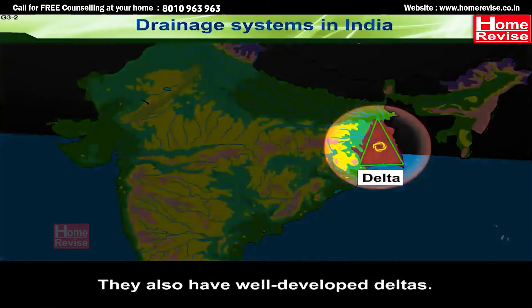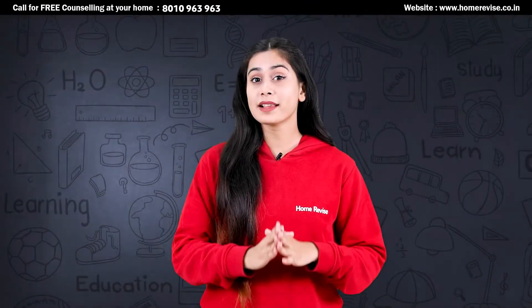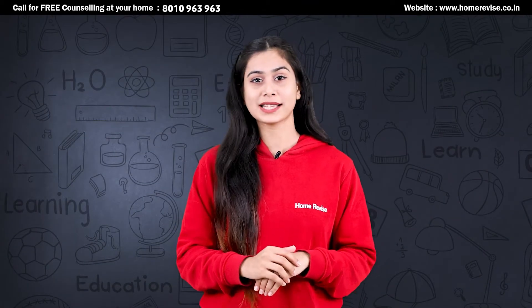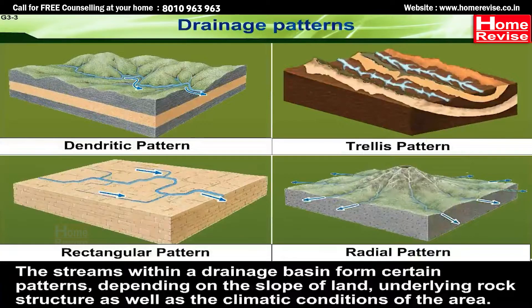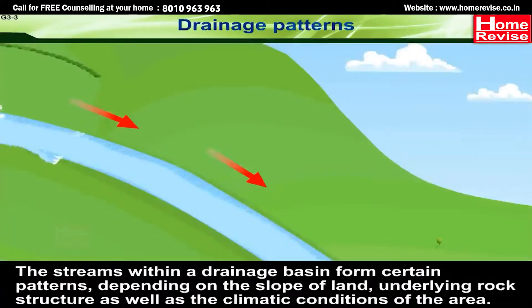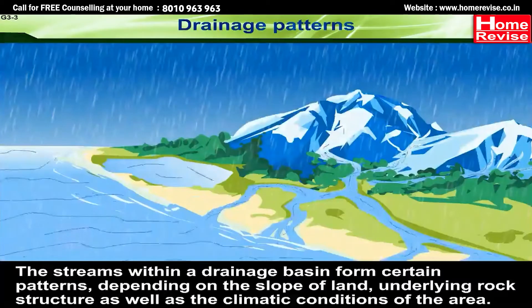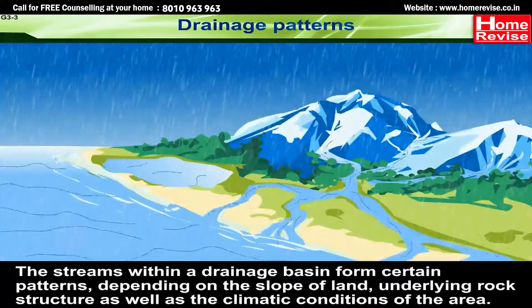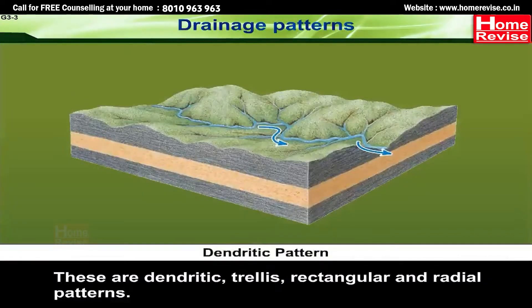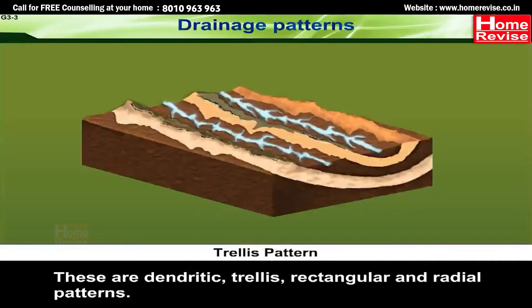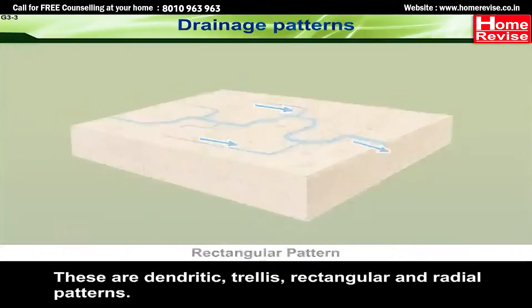They also have well-developed deltas. Rivers develop different drainage patterns depending on the slope of land, the underlying rock structure, as well as the climatic conditions of the area. These patterns are: dendritic, trellis, rectangular, and radial.